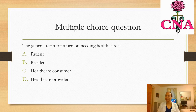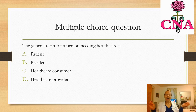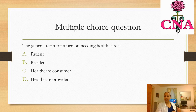Last multiple choice question: the general term for a person needing healthcare services is (a) patient, (b) resident, (c) healthcare consumer, or (d) healthcare provider. A patient needs healthcare services, a resident needs healthcare services, a client needs healthcare services — but the general term for all of them is healthcare consumer. A healthcare provider would be a doctor, therapist, physical therapist, occupational therapist, respiratory therapist, social worker, and so on.